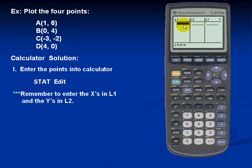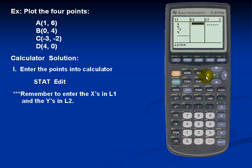So for List 1, we'll enter all of our X values, which are 1, 0, negative 3, and 4. We'll also put in the corresponding Y values: 6, 4, negative 2, and 0.